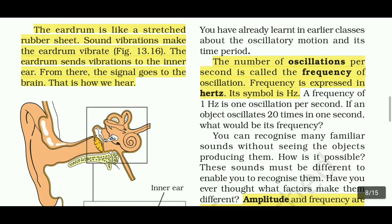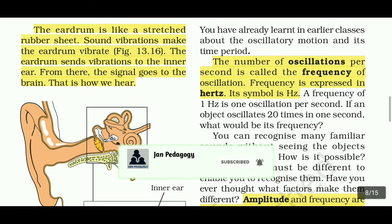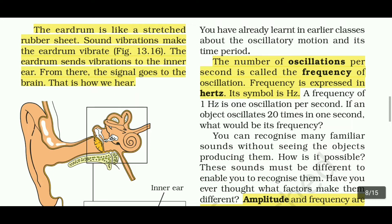In one second, there are many oscillations — that number is what we call the frequency of oscillation. That frequency is expressed in hertz; the symbol for hertz is Hz.